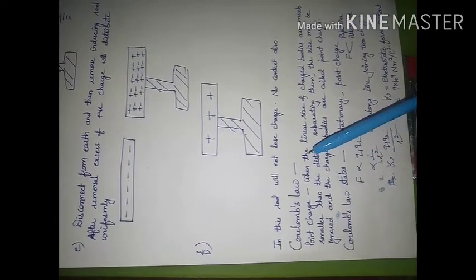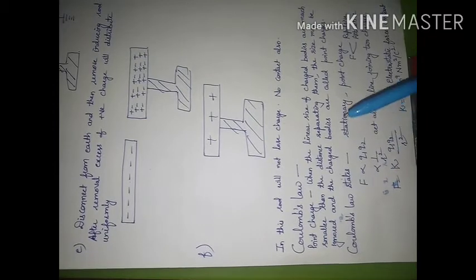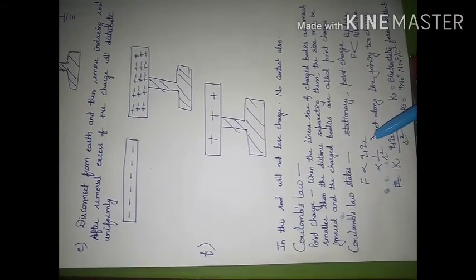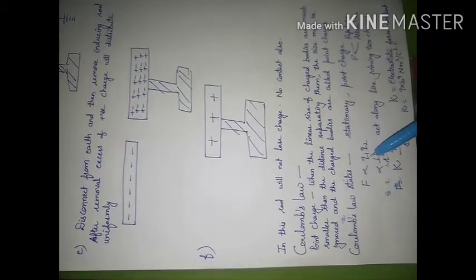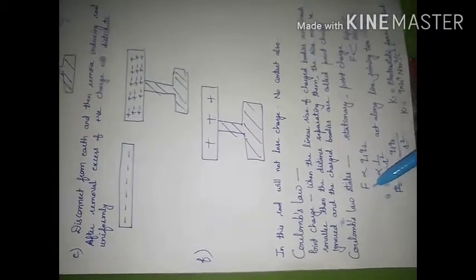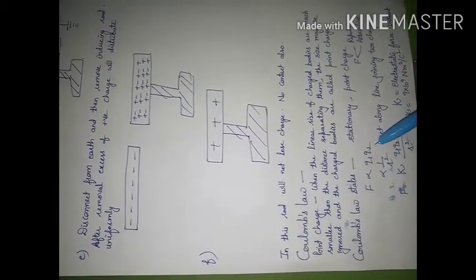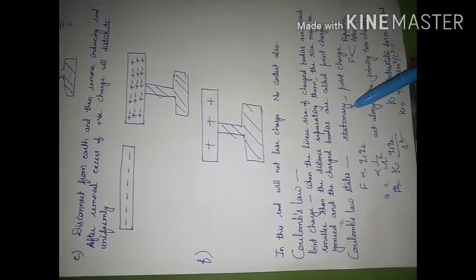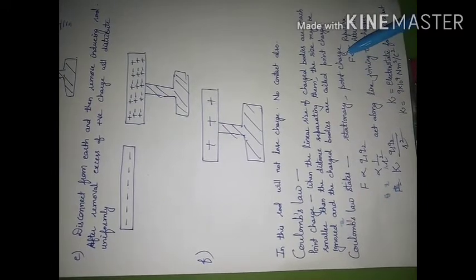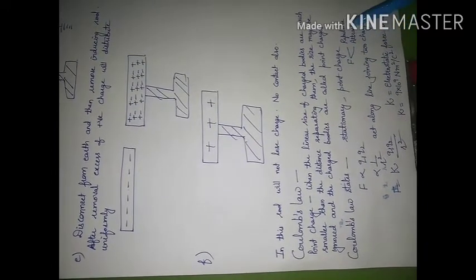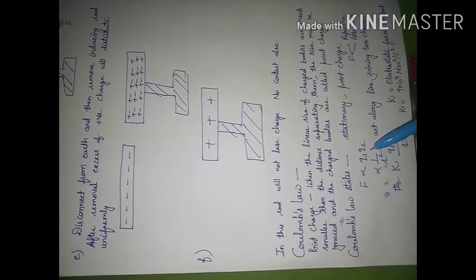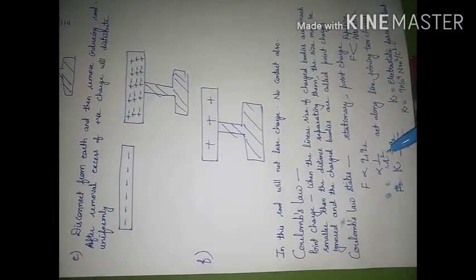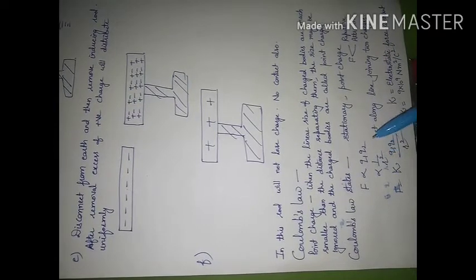When we state Coulomb's law, two things we have to keep in mind. If charges are similarly charged, there will be a force of repulsion; if oppositely charged, there will be a force of attraction. According to Coulomb's law, for charges which are stationary and are point charges, the force of attraction or repulsion will be directly proportional to the product of the charges and inversely proportional to the square of the distance between them.